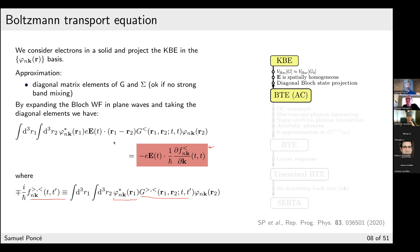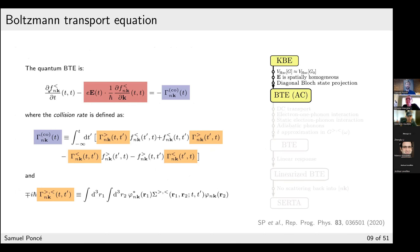The self-energy term becomes simply the applied electric field times the change of the Bloch-projected Green's function with respect to momentum — a generalized occupation function. This gives us the quantum Boltzmann transport equation (AC version), where the external field can still change with time, allowing for an oscillating field. The change of the generalized occupation function in time has the self-energy on the left and all collision terms on the right, where the collision terms involve the Bloch-projected lesser and greater self-energies (gamma functions).